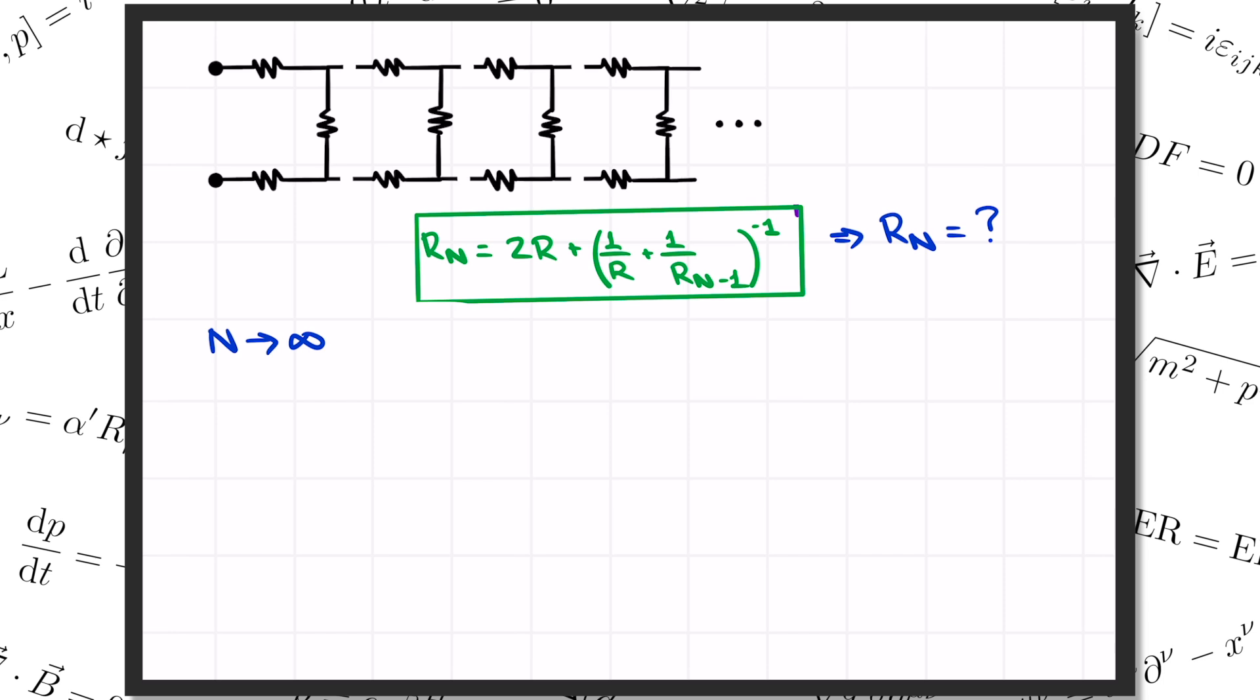But how are we supposed to do that? The key insight is that when you have an infinitely long ladder, you can add one more block to the end, and it'll still be infinite. So adding one block doesn't change the total resistance of an infinite ladder. As another way of saying the same thing, if we plug n equals infinity into our recursion relation, we get an equation relating R infinity to R infinity minus 1. But infinity minus 1 is still infinity. So this equation actually relates R infinity to itself.